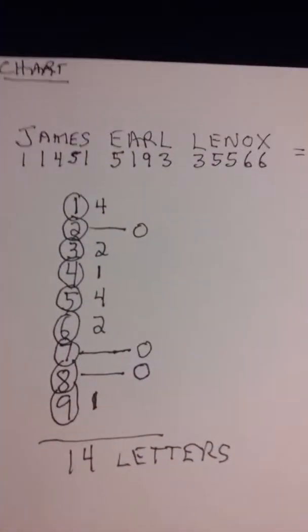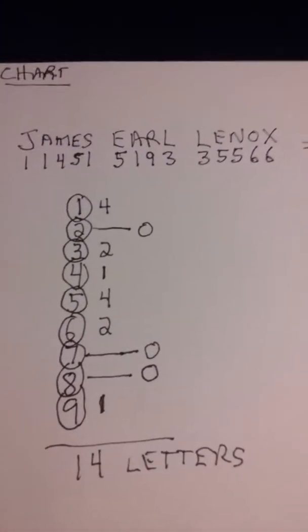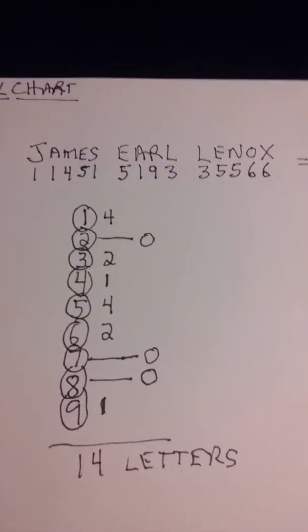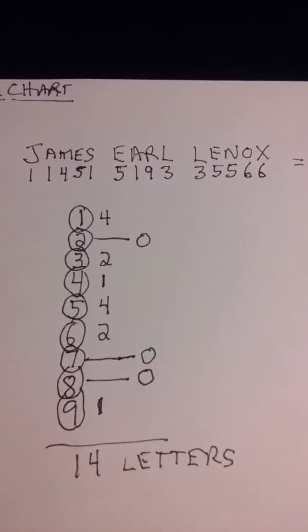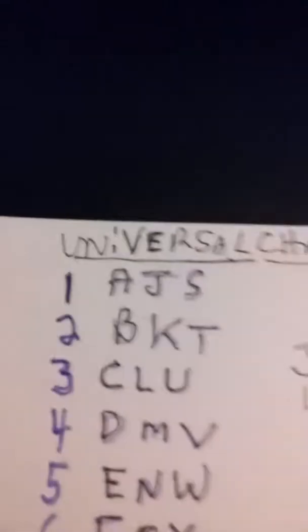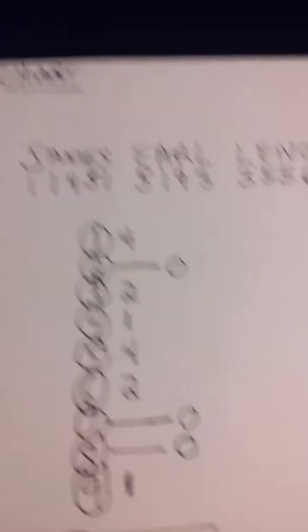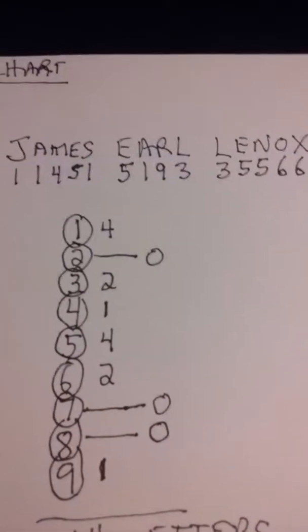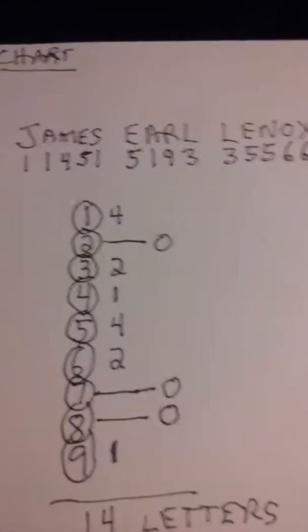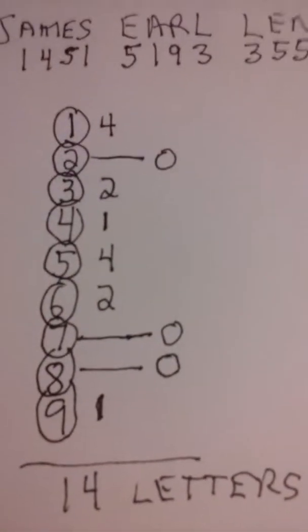So if we took the name James Earl Lennox as an example, that's a name that has a reasonable amount of letters in it, we start numerizing it. A J as we went before is a 1. An A is a 1, and an S is a 1. Going back to that chart, AJS equals 1. And then you find that it has four 1s, so you put 4 next to the 1. And it has no BKTs. You put 0 next to the 2.